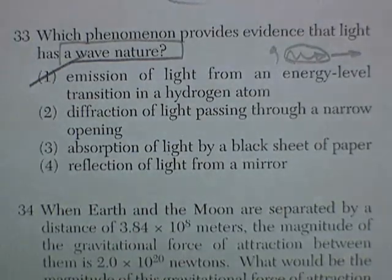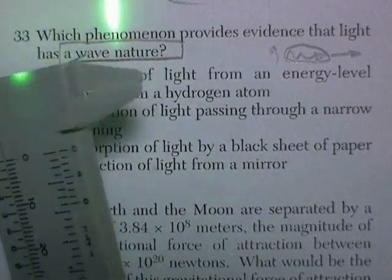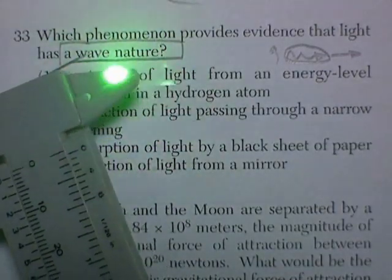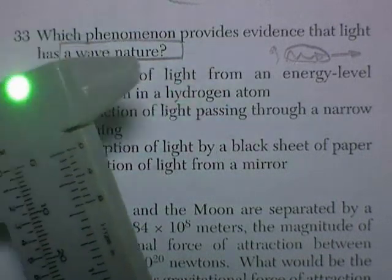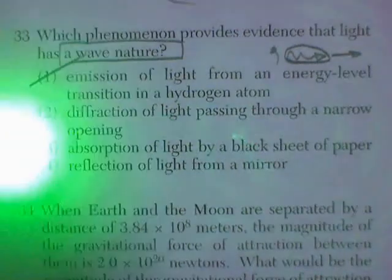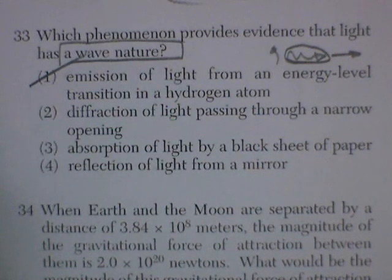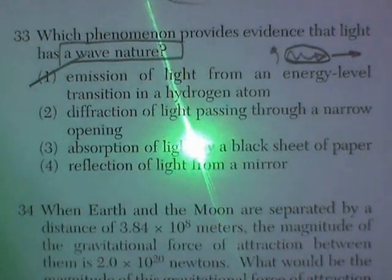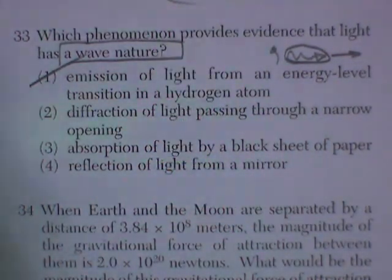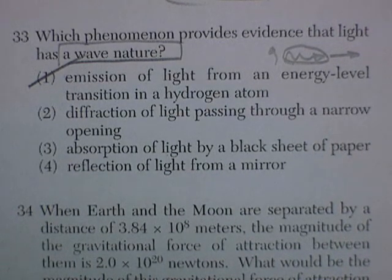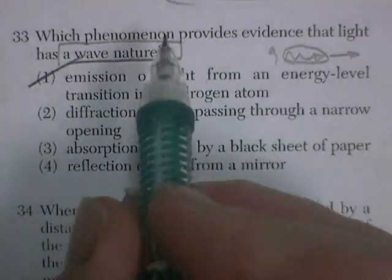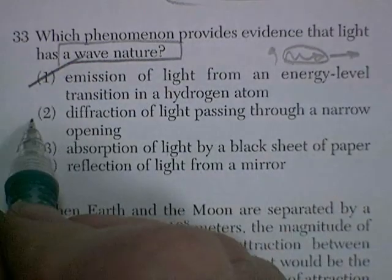Diffraction of light passing through a narrow opening — let's look at that. Here's light from a laser passing through a narrow opening between the slits of a caliper. You can see the little diffraction pattern — the light is spreading out. That's a unique wave characteristic; diffraction is really unique to waves. So which phenomenon provides evidence that light has wave nature? I'm going with diffraction.